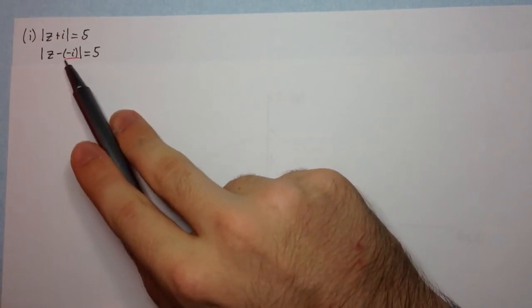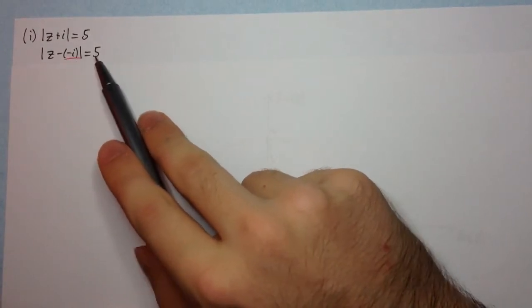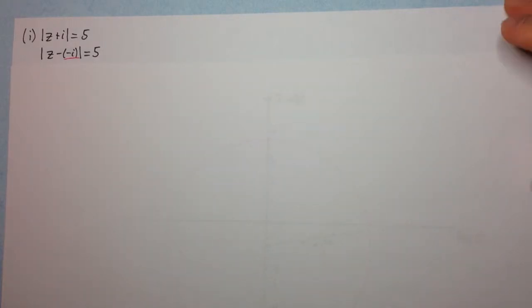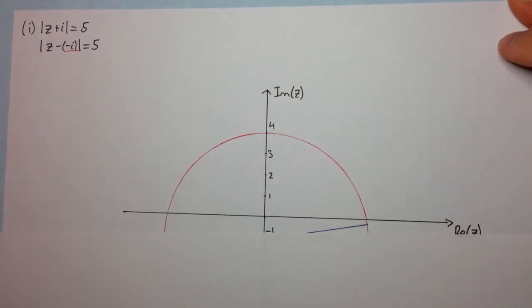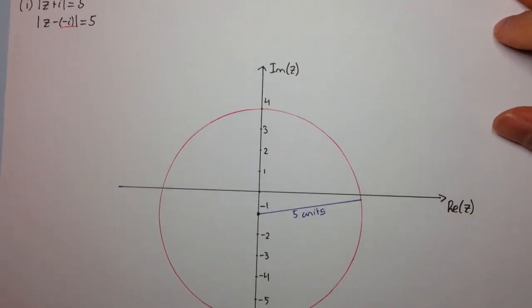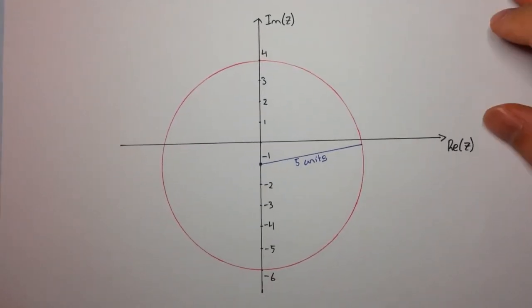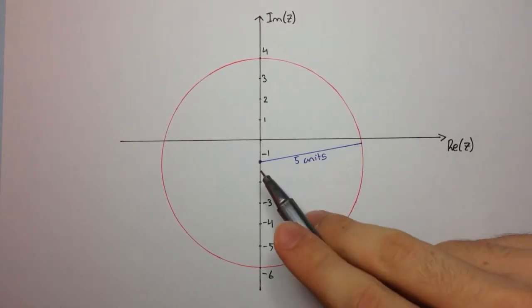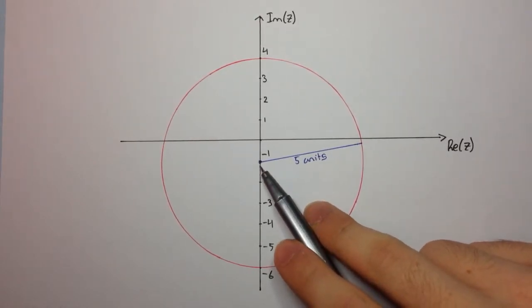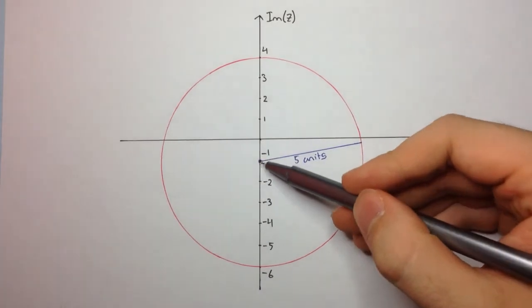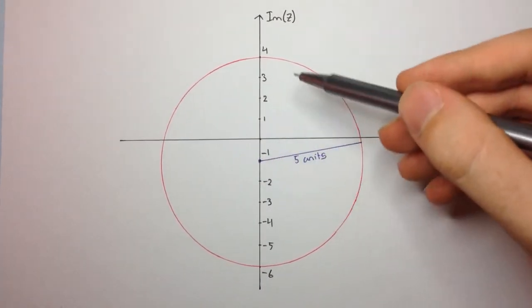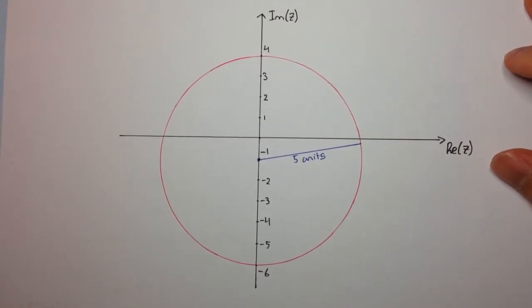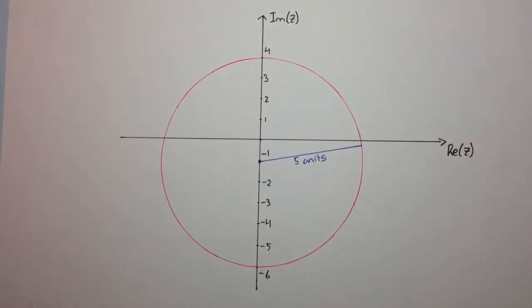The circle has center at minus i and it has a radius of 5 units. So when you draw this on the argand diagram, this is what we get. The locus is the red circle here. The center is at minus i. So we've gone down minus 1 units on the imaginary axis, and this corresponds to the complex number minus i. And the radius is 5 units.